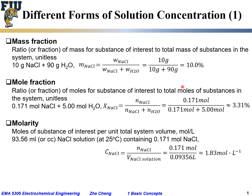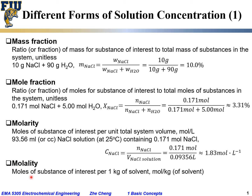The last concentration type you may encounter is molality. Molality is similar to molarity but uses mass instead of volume. It is the moles of the substance of interest — for example, moles of sodium chloride — per unit mass of solvent, typically one kilogram. Its unit is mole per kilogram of solvent.